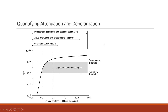This next graph shows attenuation and depolarization effects plotted as BER versus time percentage. Heavy thunderstorms, cloud attenuation, effects of melting layers, tropospheric scintillation, and gaseous attenuation all cause the signal to degrade, and may push the signal beyond the acceptable performance region.